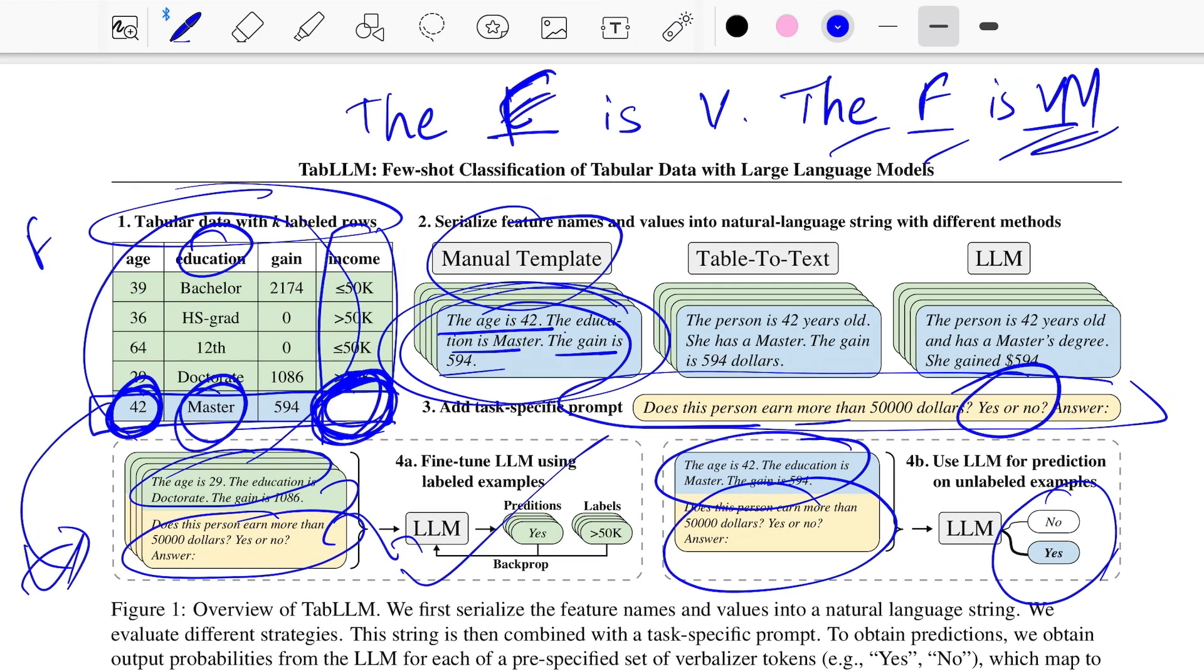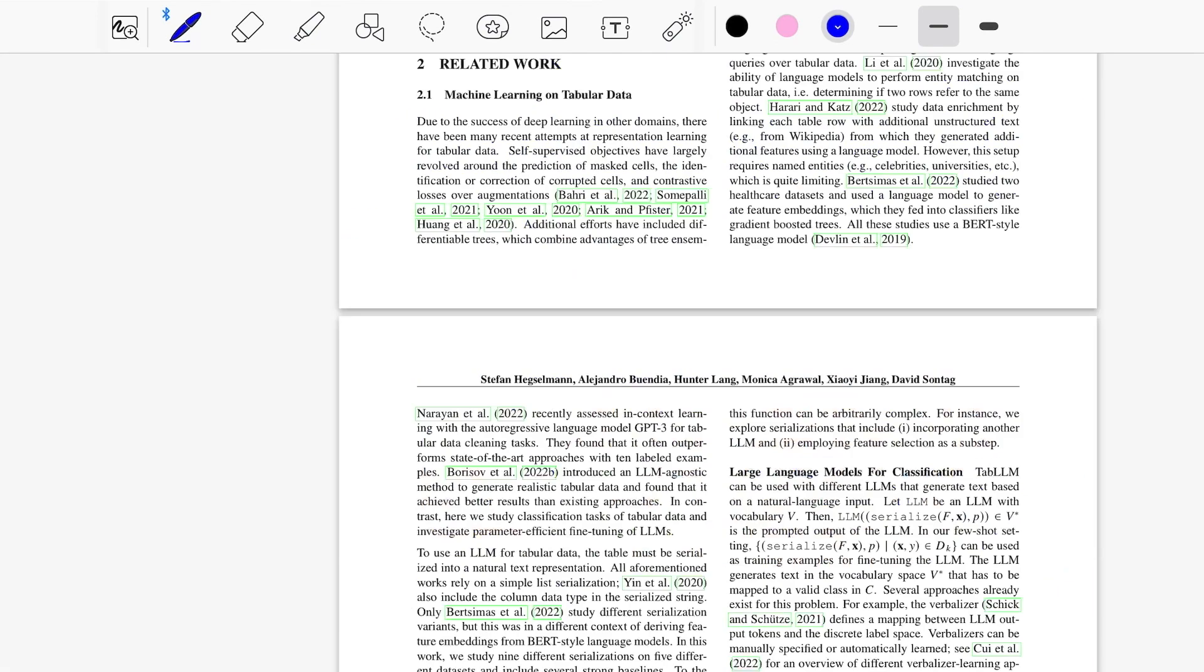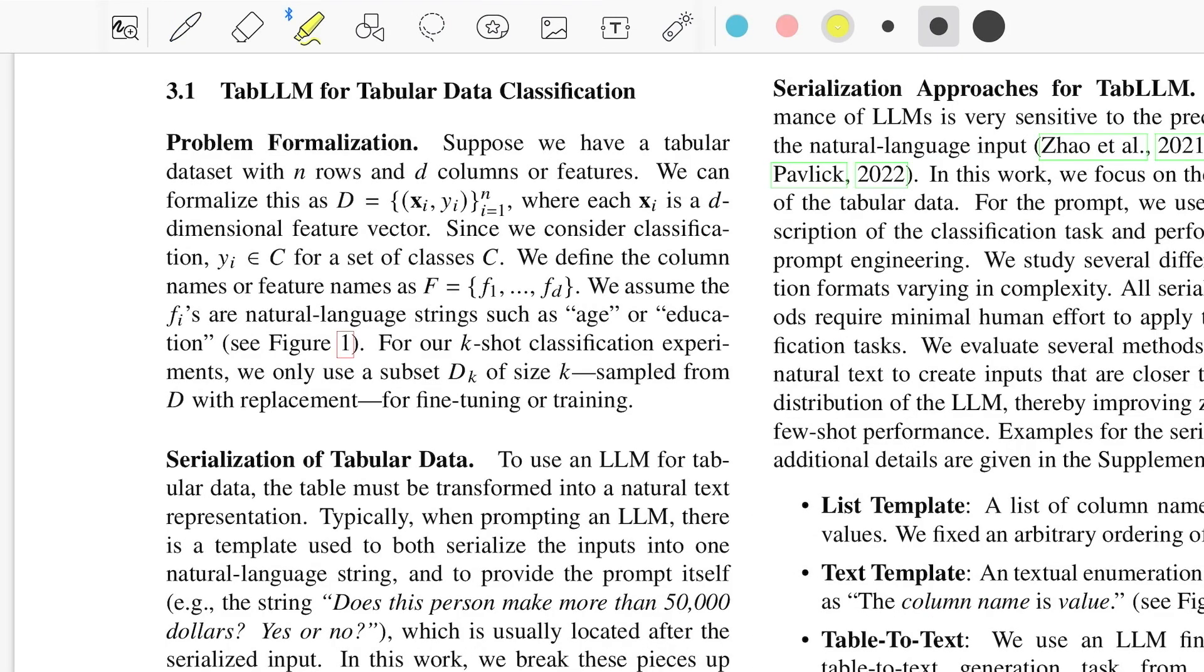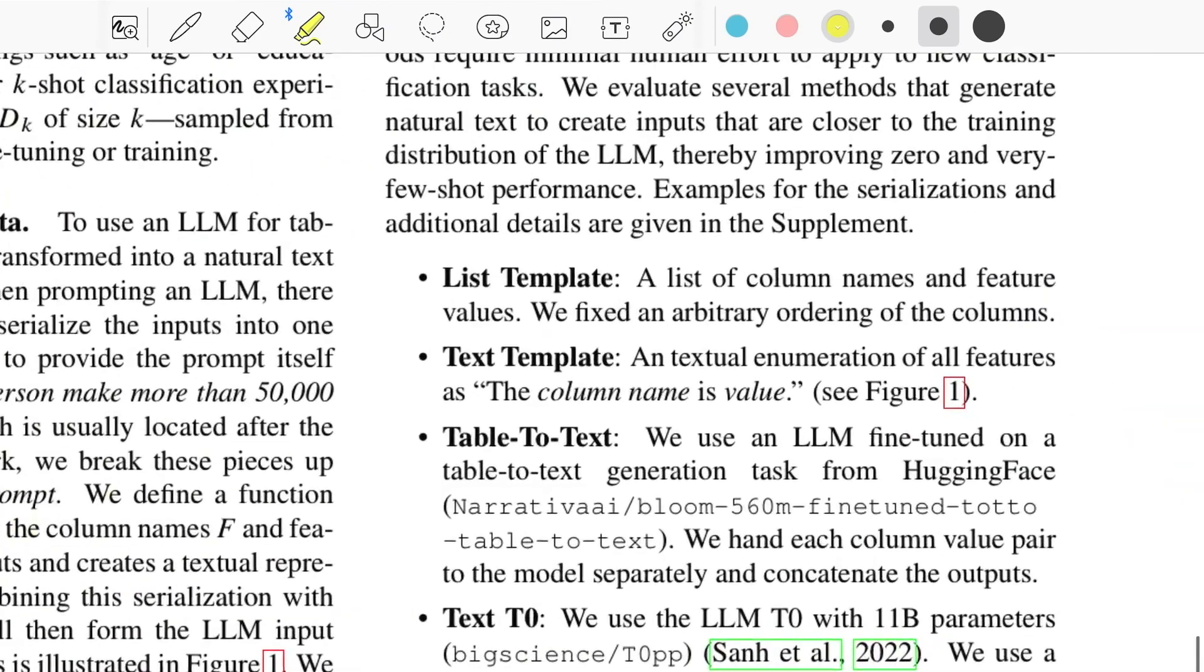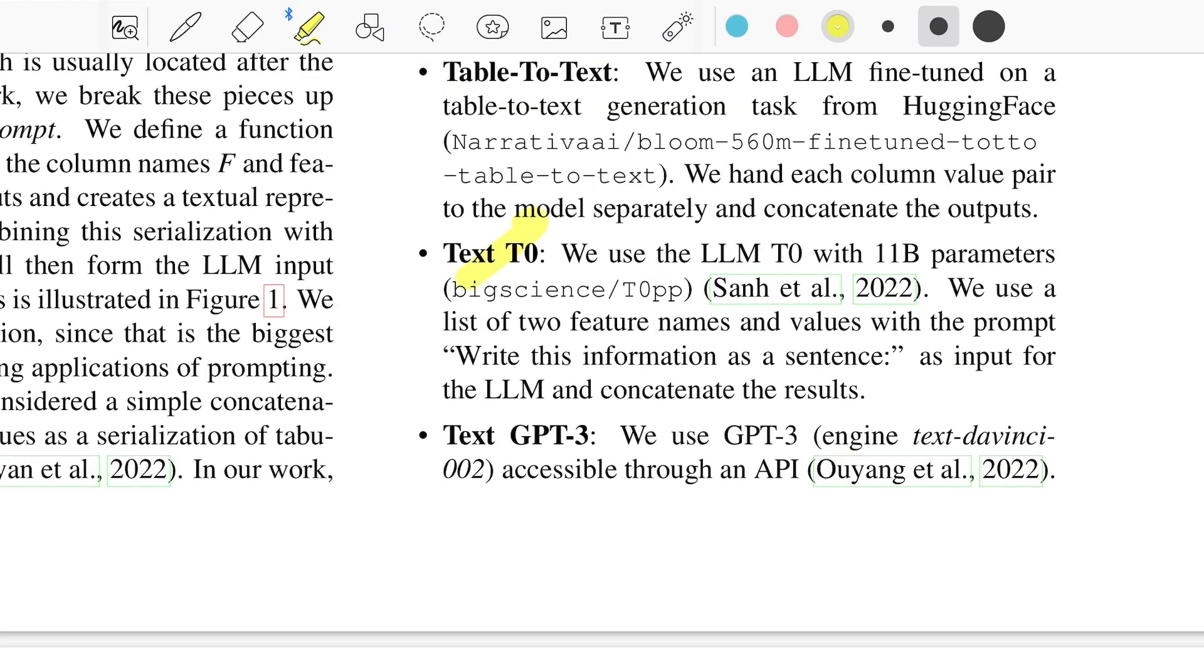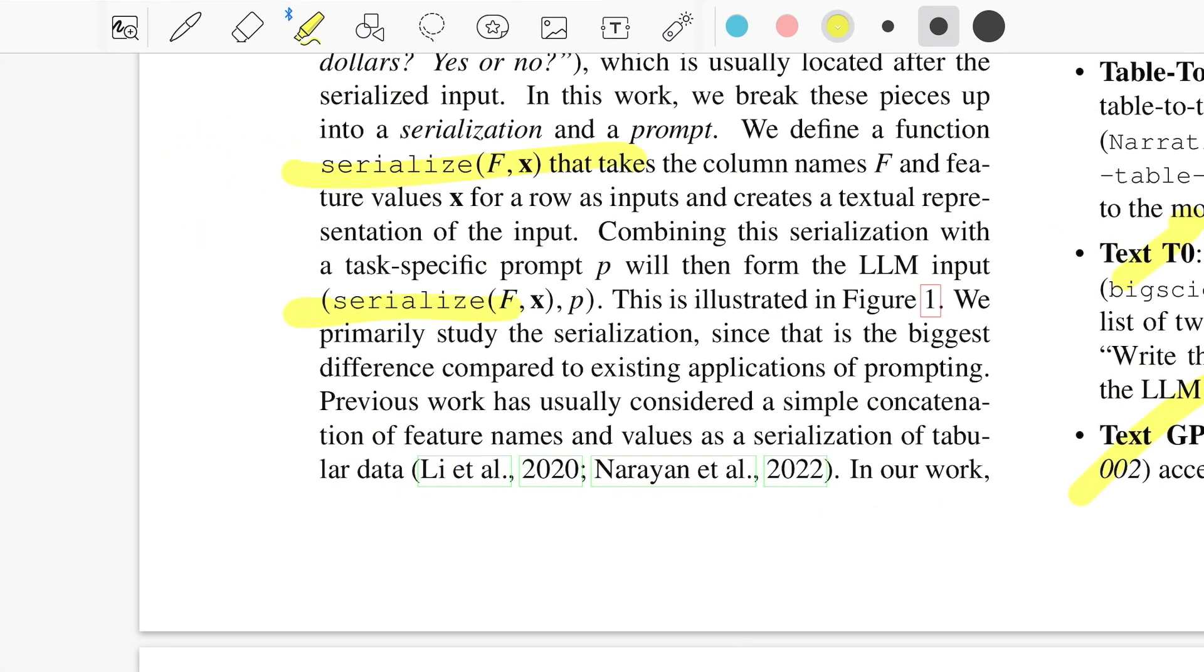This is the entire concept of few-shot classification on tabular data using large language models. The problem formalization: let's say we have n rows and d columns or features. The entire dataset is composed of x_i's and y_i's where x is a d-dimensional feature and y is the class from the set of classes we have. In case you're solving a regression task, you can quantize the target column into certain manageable number of classes and do prediction as a proxy to doing regression. The serialization is done where F is the feature column names and x is the values associated with them. The serialize function is what they experimented: it could be list-based, text-based, table-to-text, GPT-3, T0, and more. Once serialization is done, you append the prompt p and then pass it to the language model for either inference or fine-tuning.